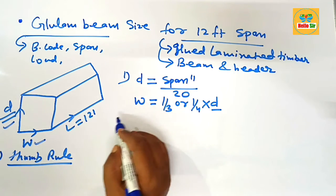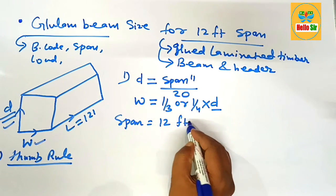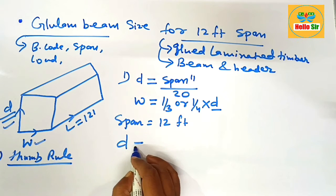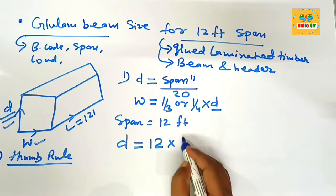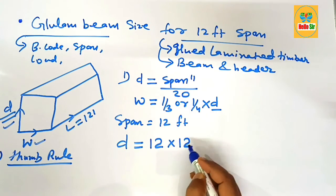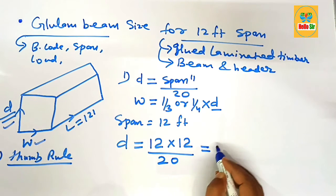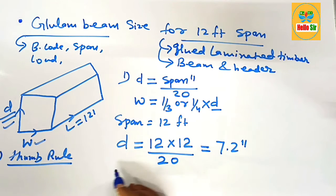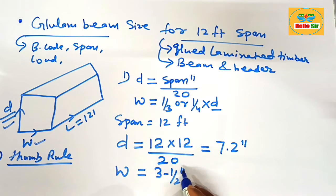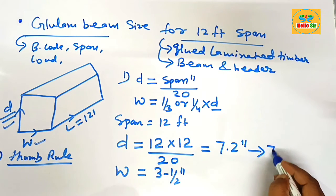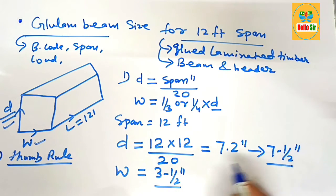The span length is 12 feet. For the depth of the beam, convert 12 feet to inches: 12 multiplied by 12 equals 144 inches, then divide by 20. This comes to about 7.2 inches. The width section of the glulam beam is about 3.5 inches. The depth should be rounded to the nominal size of 7.5 inches.